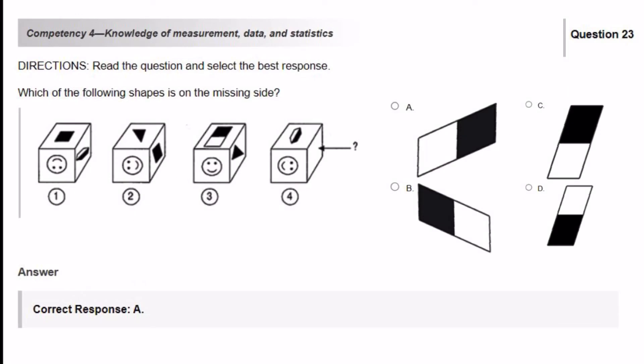Which of the following shapes is on the missing side? So the missing side is in number four, and of course it's here where the arrow is. If you notice the smiley face is on the side and the eyes are to the right. So I'm going to go back to number three and I'm going to look here. And so this shape was basically transformed over here. And it looks something like this.